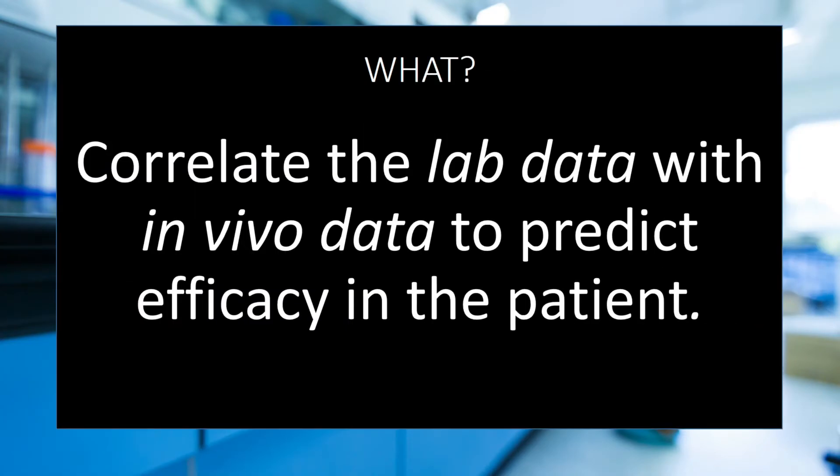In AST Part 1, I discussed the laboratory procedures with an emphasis on broth microdilution. The minimum inhibitory concentration in micrograms per ml is only useful for determining the best treatment plan for your patient once it is correlated to expected drug concentrations in the live patient. The same is true for the zones of inhibition obtained from the disk diffusion method.